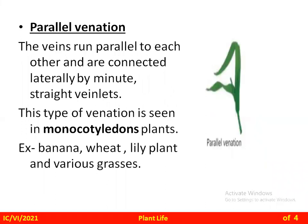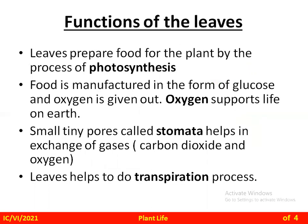The next type of venation is parallel venation. Here you can see in the picture the midrib at the center of the leaf, and the veins run parallel to each other, connected laterally by minute straight veinlets. This type of venation is seen in grasses and in most monocotyledon plants. Dicotyledon plants show reticulate venation, whereas parallel venation is seen only in monocotyledon plants. Examples are banana, wheat, lily, and various grasses.